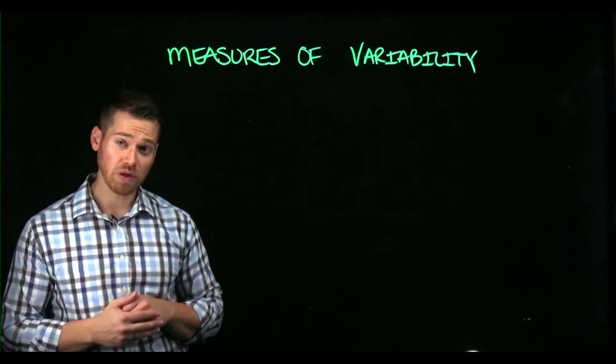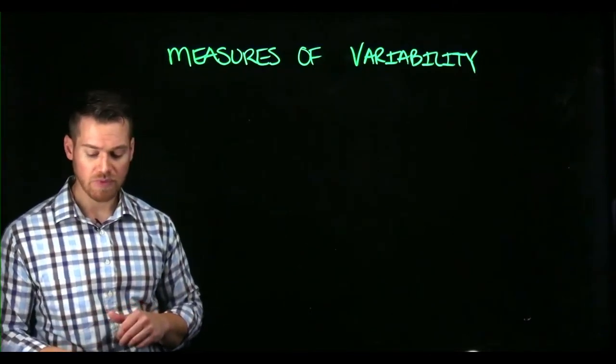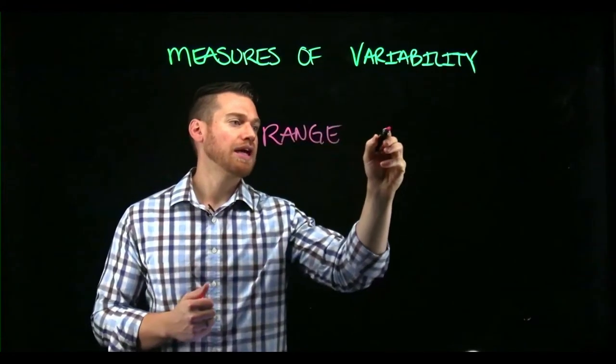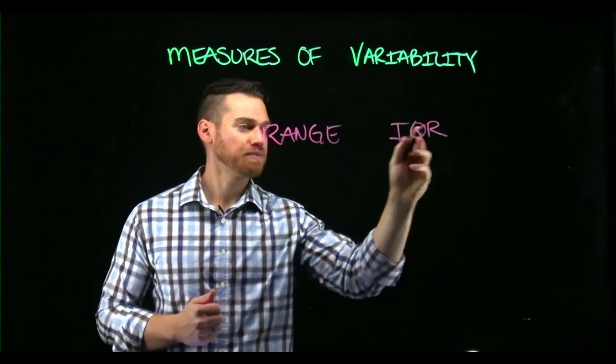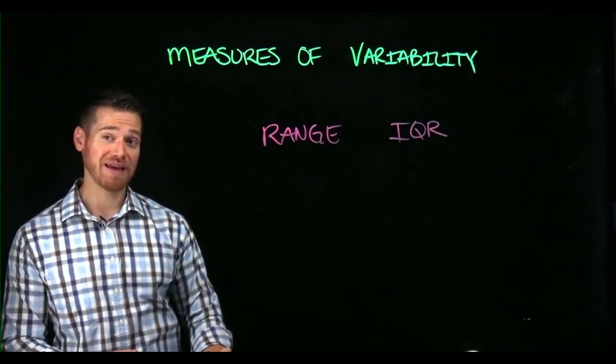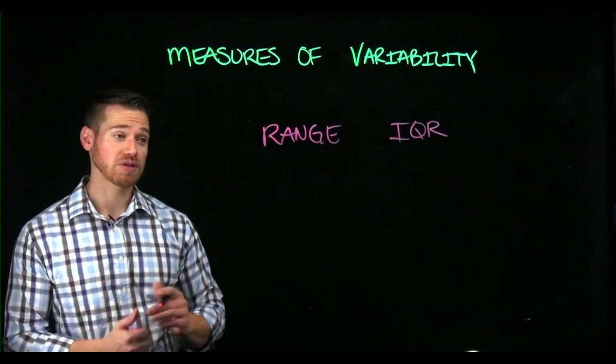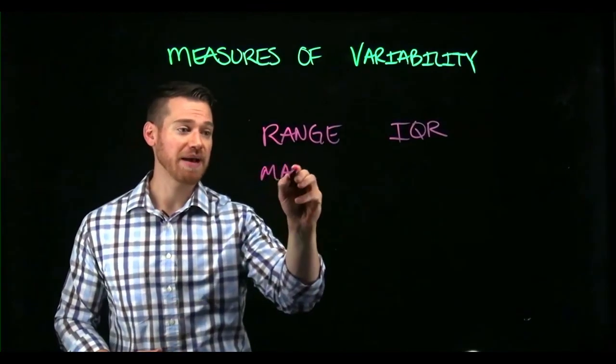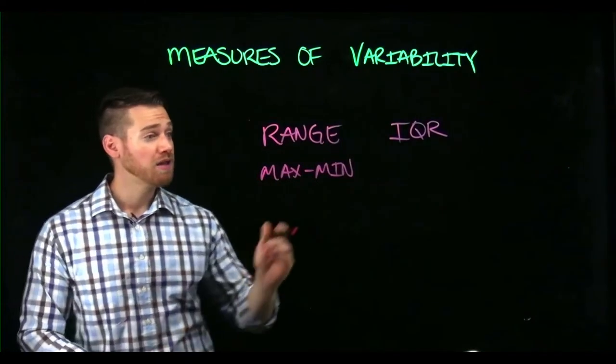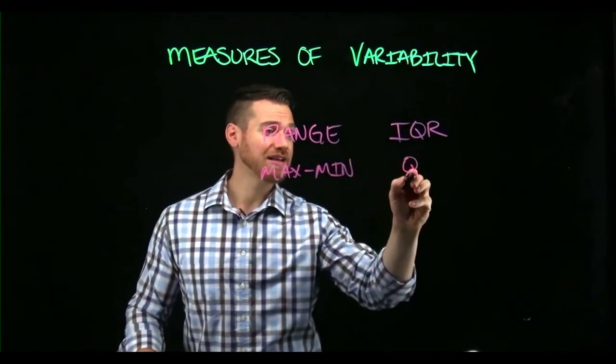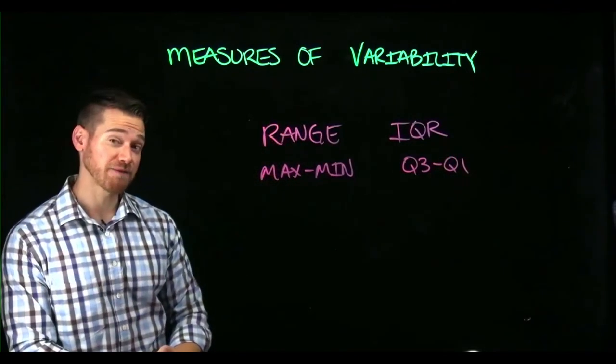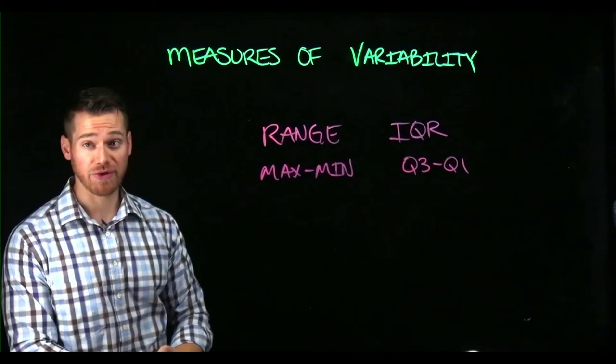Let's start with some of the simpler ones. The range is simply the span of the scores, obtained by getting the maximum and subtracting the minimum in our data set. The IQR is the inner span of the scores, obtained by subtracting the first quartile score from the third quartile score.